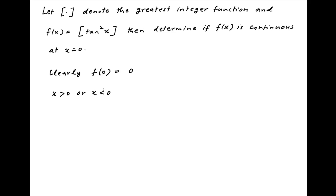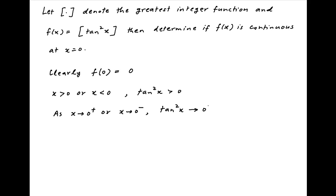Now regardless of whether x is positive or x is negative, tan square x is always positive. Therefore, as x tends to 0 from the positive side or x tends to 0 from the negative side, tan square x tends to 0 from the positive side only, which implies that the integral part of tan square x is equal to 0.